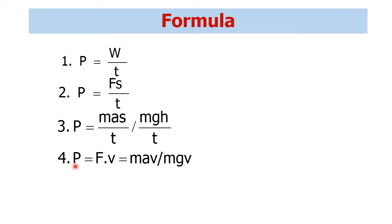The fourth formula is the relation between power, force and velocity: P equal to F into V. We have already discussed that relation in our previous lecture. We can also write it as m·a·V, and when we use acceleration due to gravity in place of a, we can write m·g·V. There is another formula: rho equal to m by V, used to calculate the mass of water in a deep well.